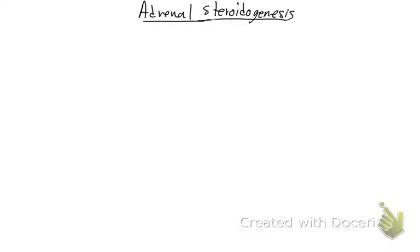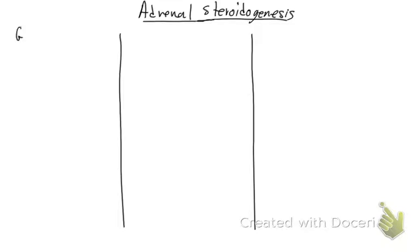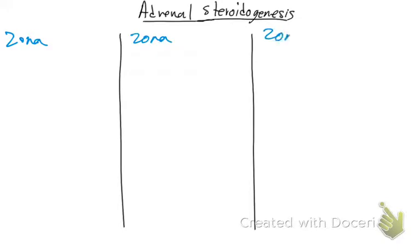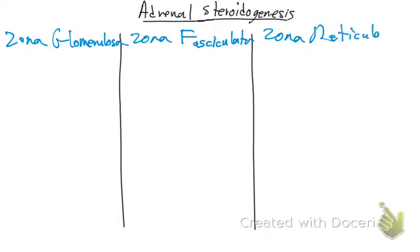We have three compartments — the three zones: G, F, and R — zona glomerulosa, zona fasciculata, and zona reticularis. All of the steroidogenesis starts in these zones. In the zona glomerulosa, we start with cholesterol — that's correct, cholesterol is the starting point.